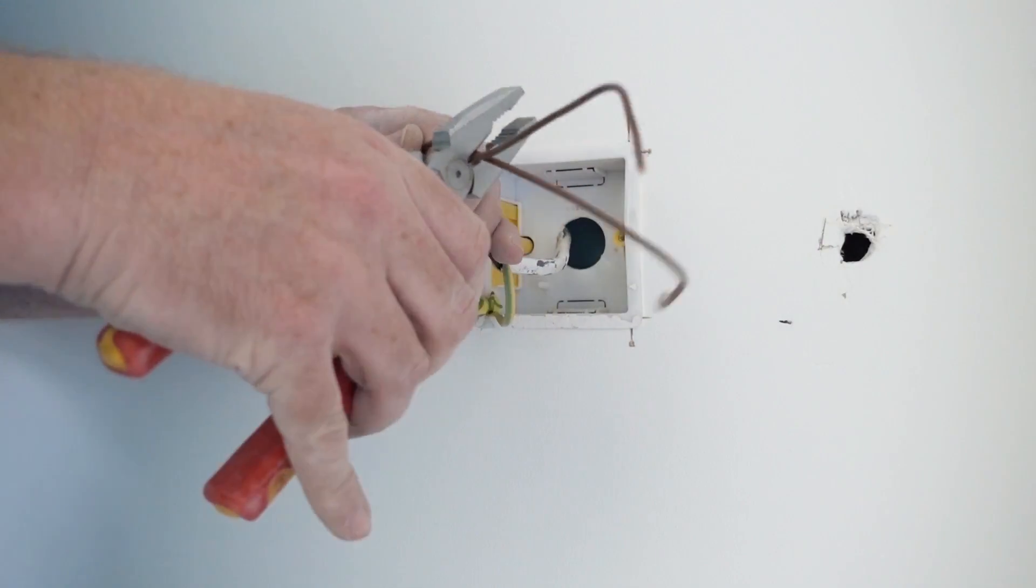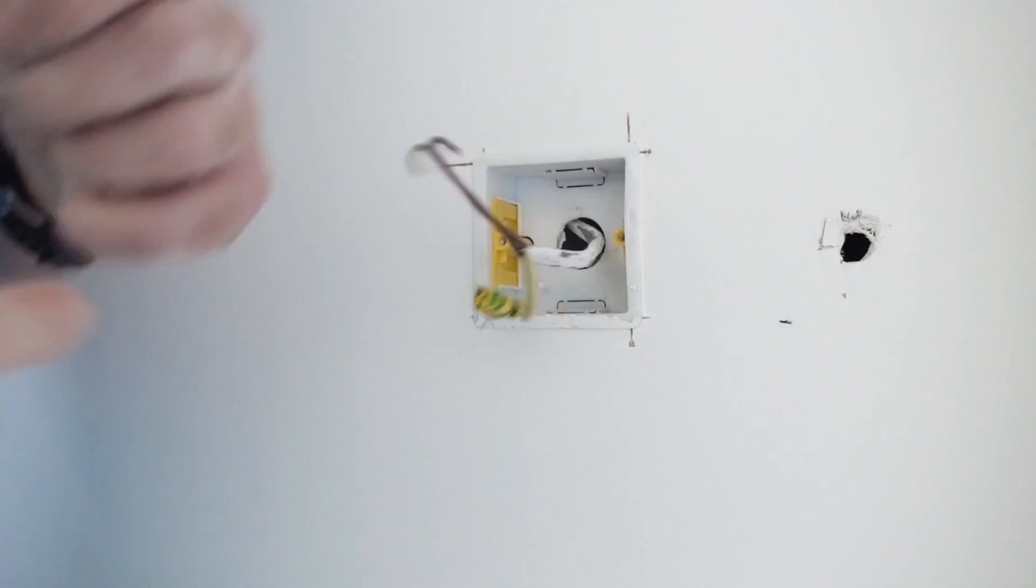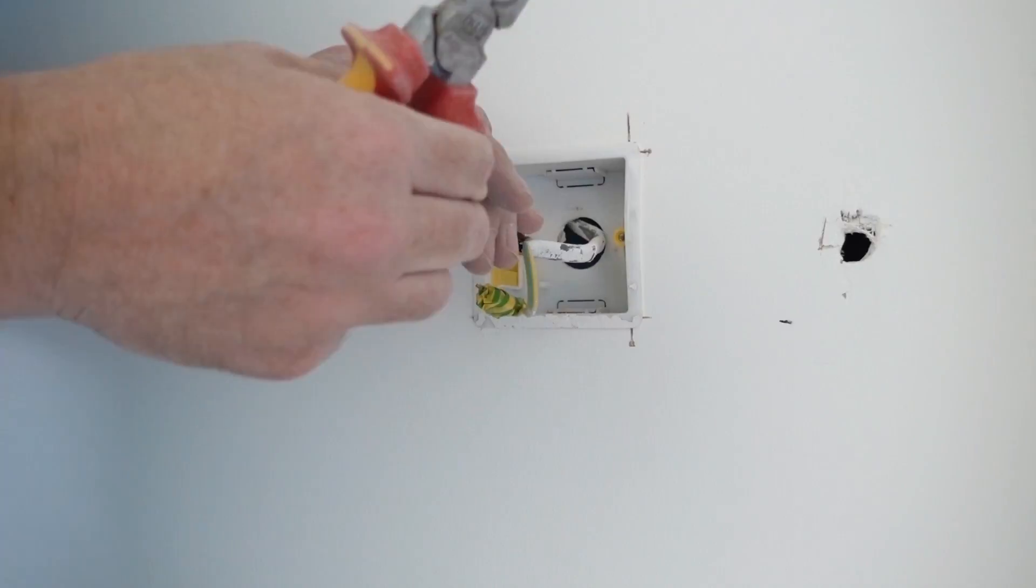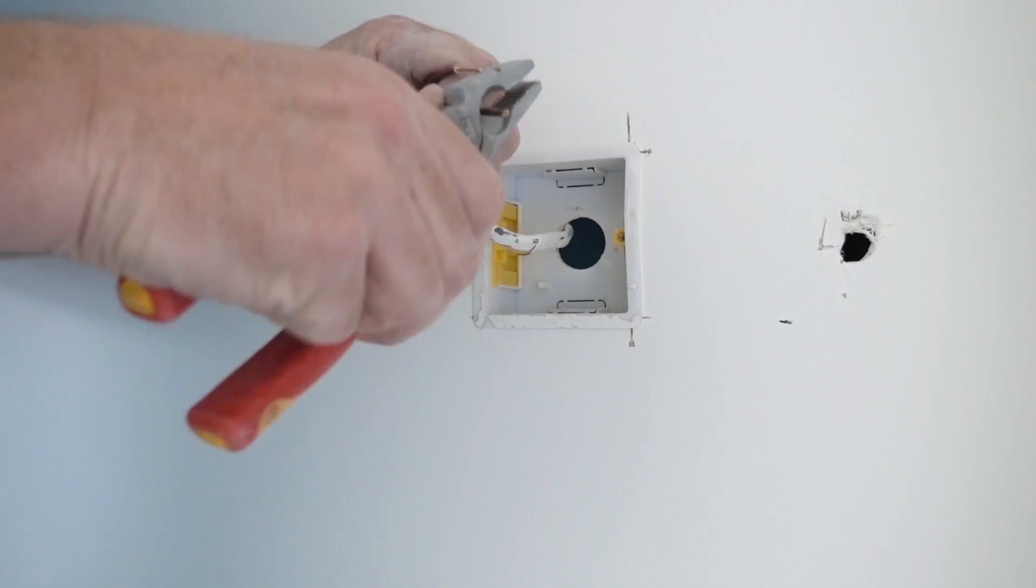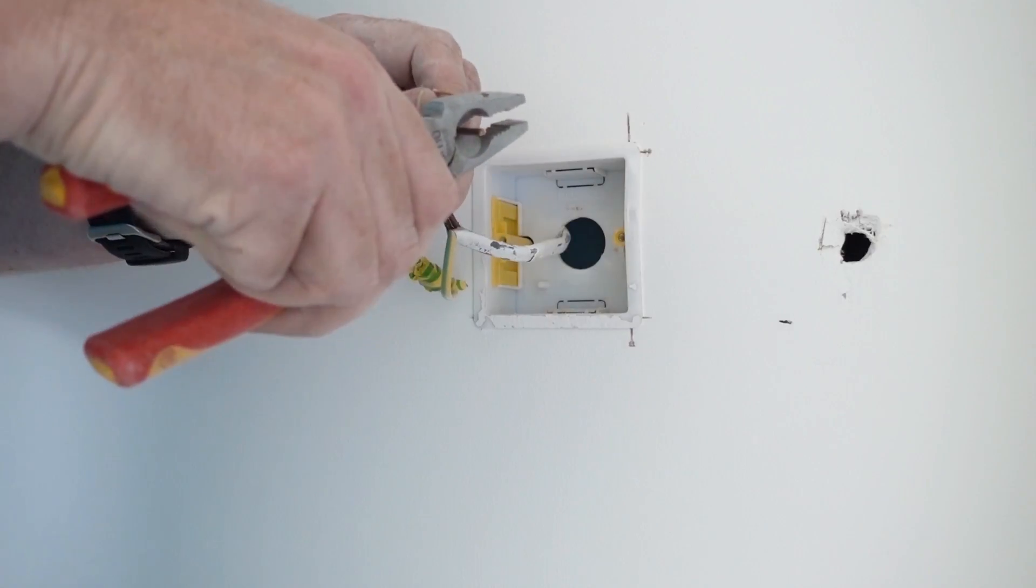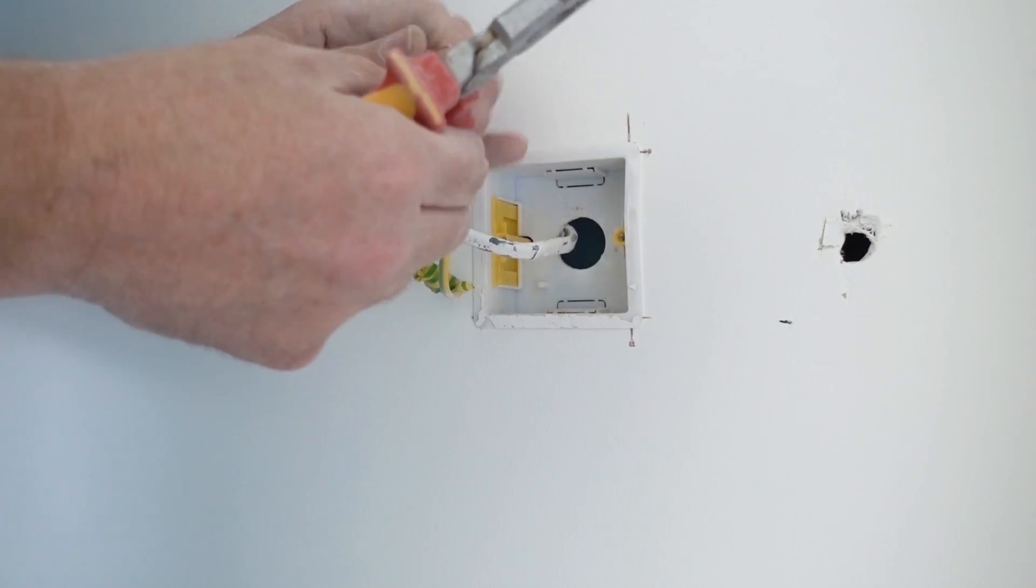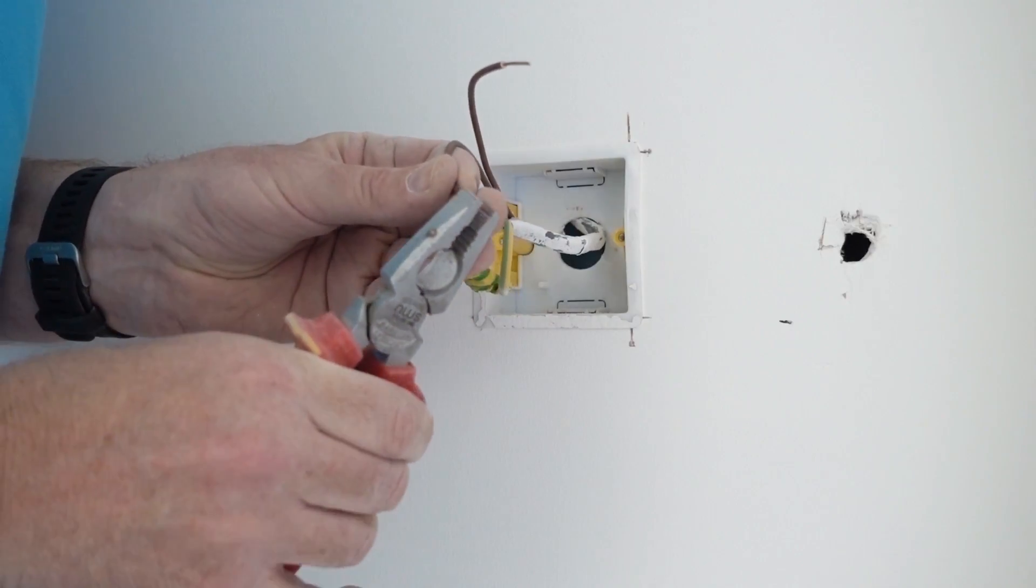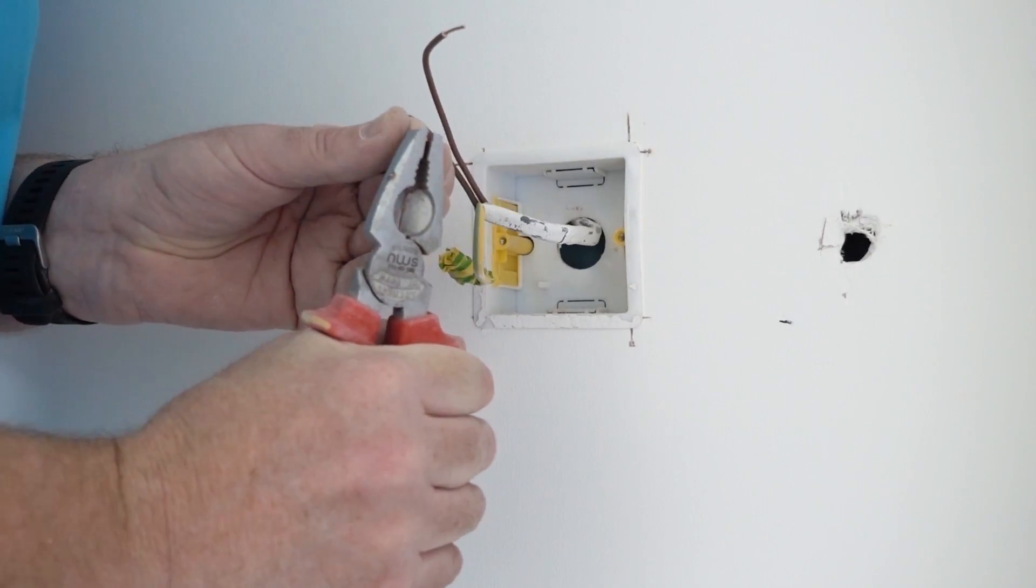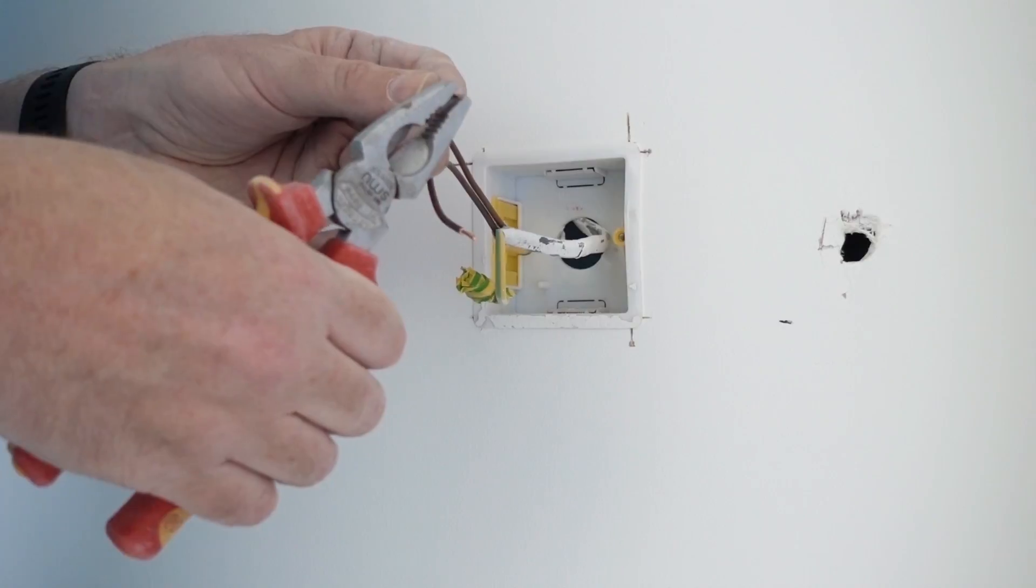Right then, let's just cut these down to size. Strip the ends off. Now to ensure a really good connection within the light switch, just double the ends over. Squeeze with this one.